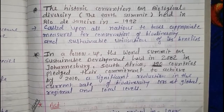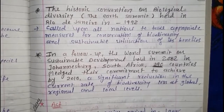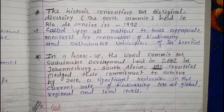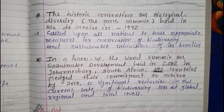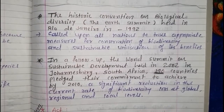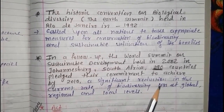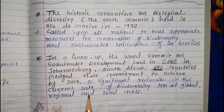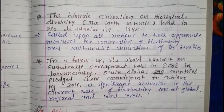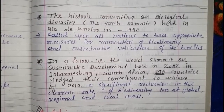The second point: a pledge was made — this was from a 2002 summit — that by 2010, after 8 years, they would try to achieve maximum protection. The goal was a significant reduction in the current rate of biodiversity loss at global, regional, and local levels. The pledge was taken to reduce the rate of destruction as much as possible.